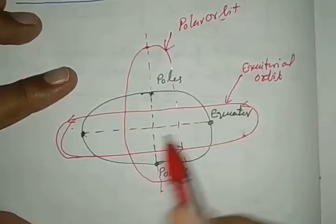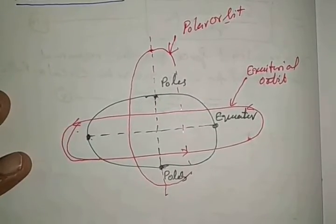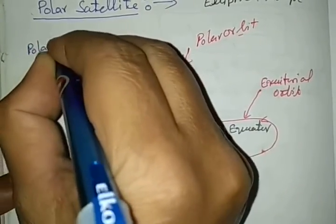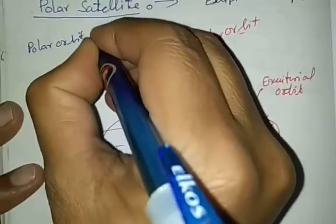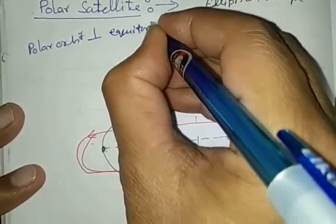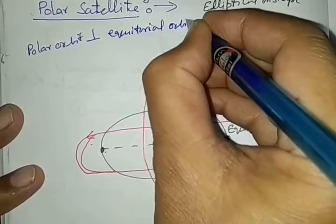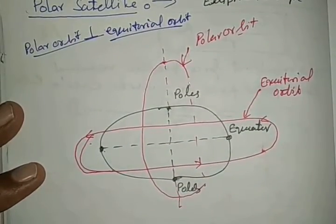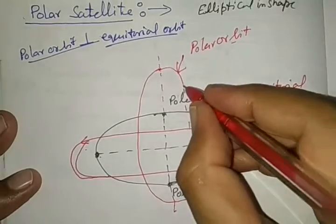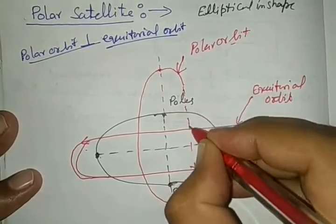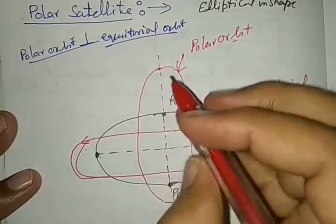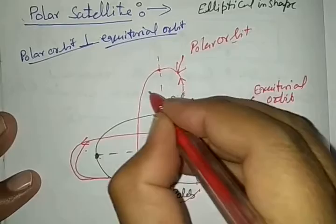Polar orbit is perpendicular to the equatorial orbit. One must have to clear that the polar satellite revolves in polar orbit, and in this polar orbit it is revolving this way.